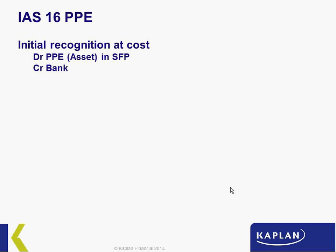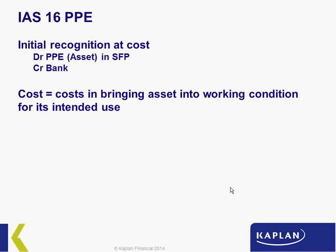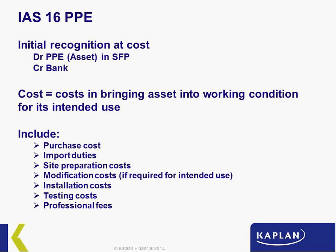For initial recognition, to record an item of PPE we debit PPE as a non-current asset and credit bank. Initial recognition, according to IAS 16, must be at cost. Cost is defined as being the cost incurred in bringing the asset into working condition for its intended use.